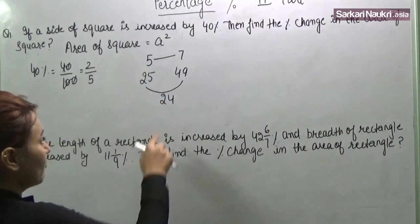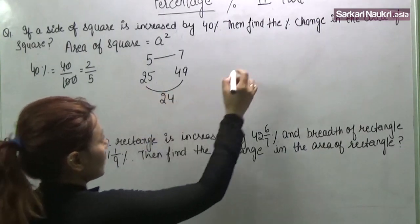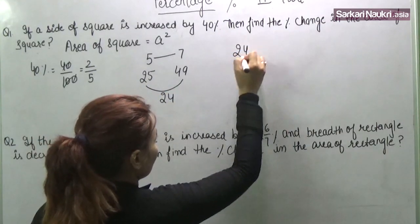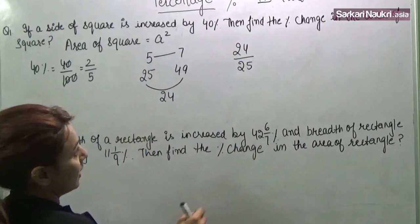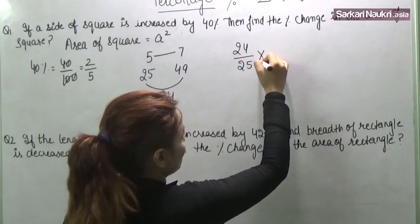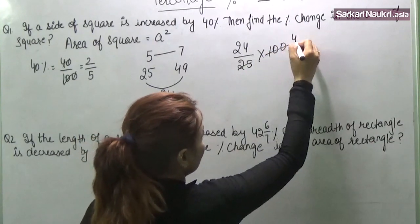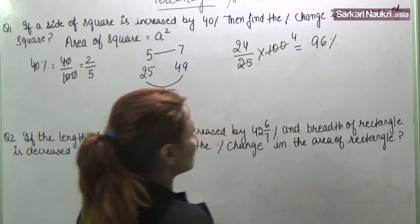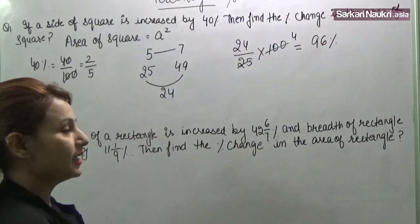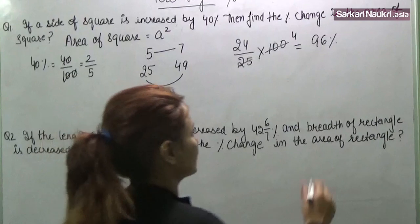So it is 24 on 25. We are asked percent change. What will be the percent? This will be 4 and 24 into 4 is equal to 96. Percent change will be 96. This is the answer.